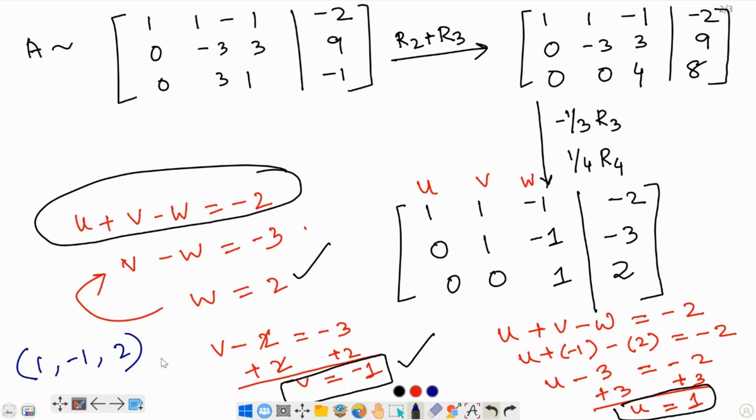So, see this is the solution. And keep this thing in mind that this form is row echelon form. Okay. Where you have a diagonal of 1's and 0's beneath it. Yeah. And one thing it really doesn't matter what's here. Okay. So, keep that in mind that this is the row echelon form.